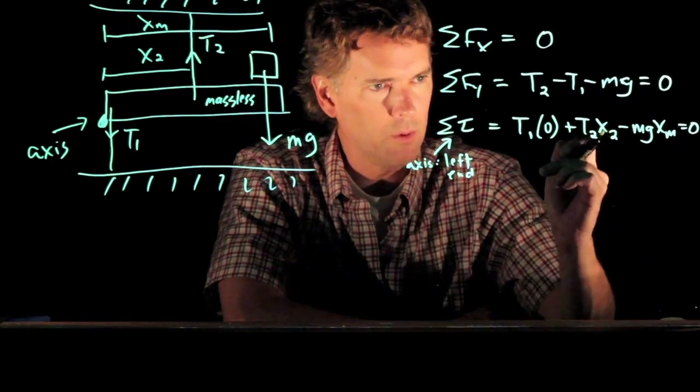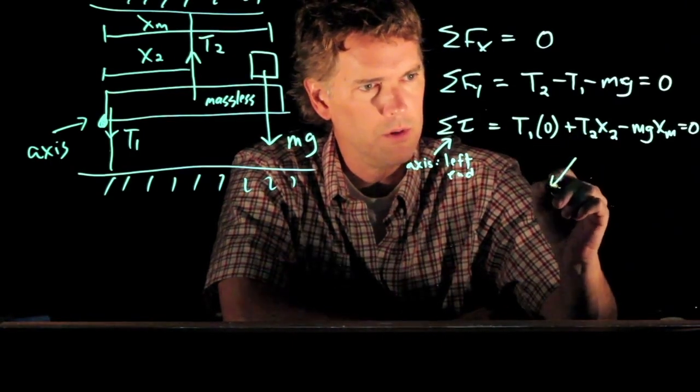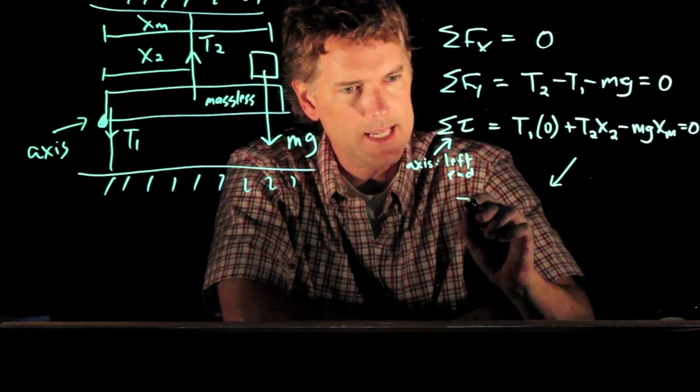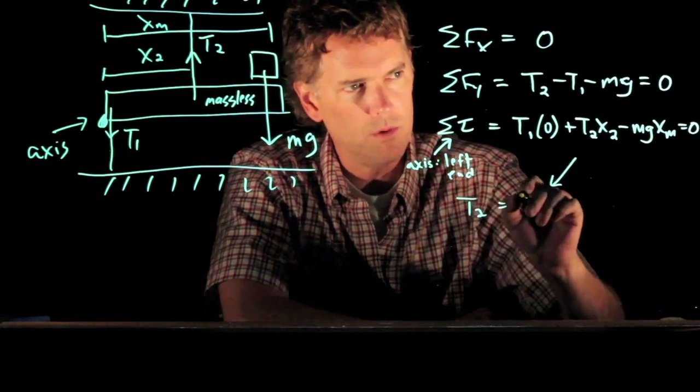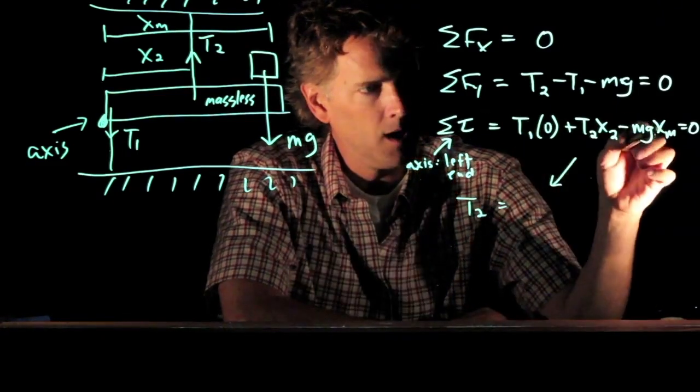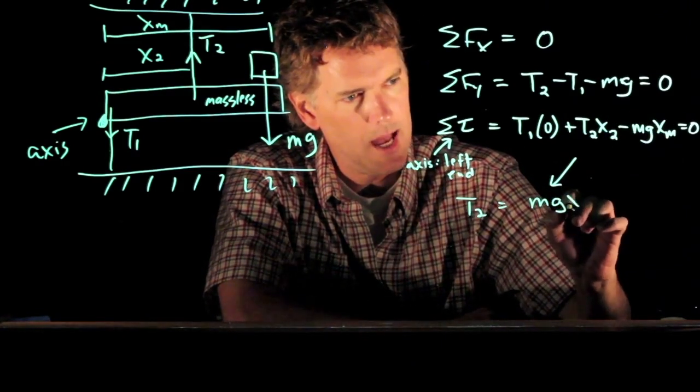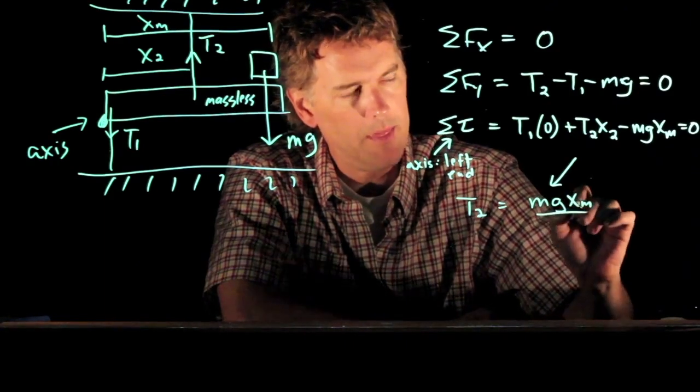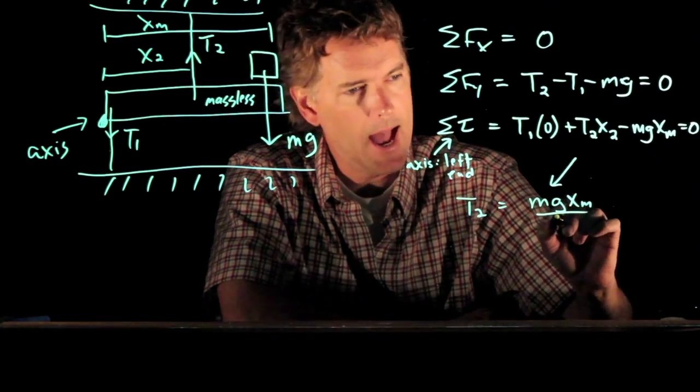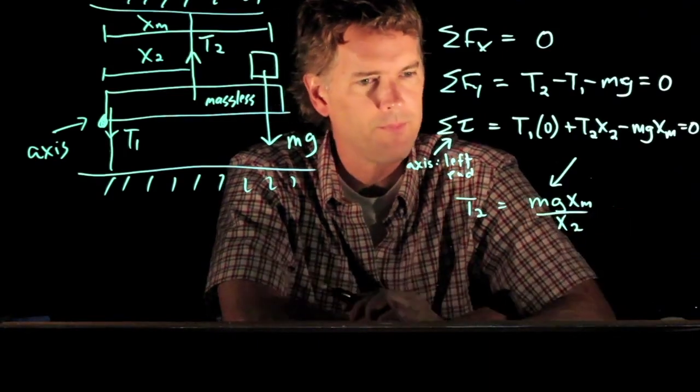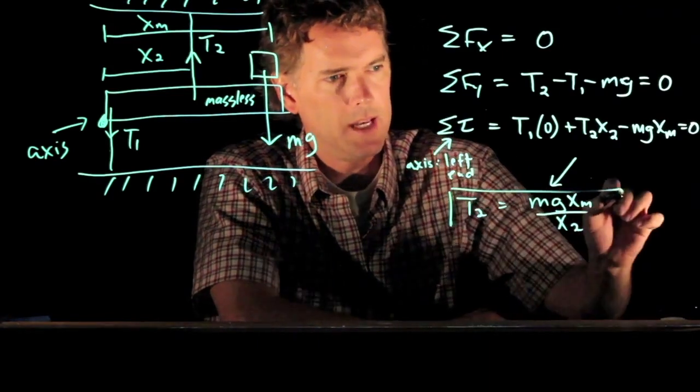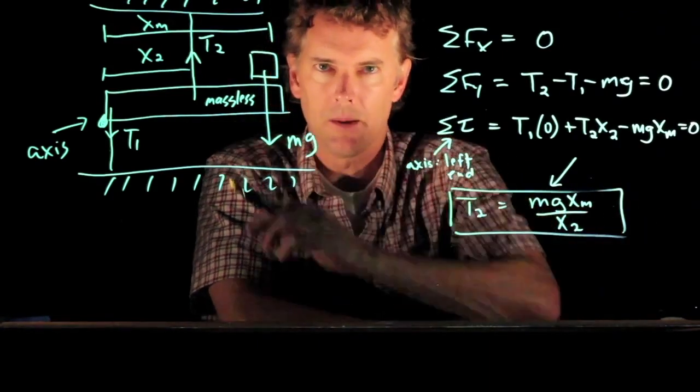So if we solve the second equation for T2, what do we get? We get T2 equals, first term goes away, last term I move over to the other side, it becomes positive mg x sub m. And then I have to divide by x sub 2. So that is the tension in cable 2.